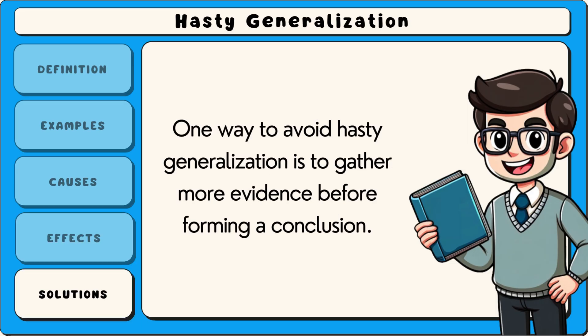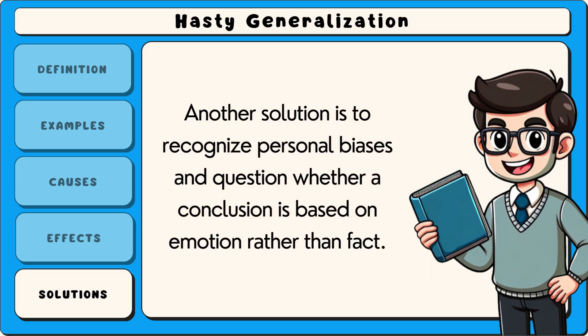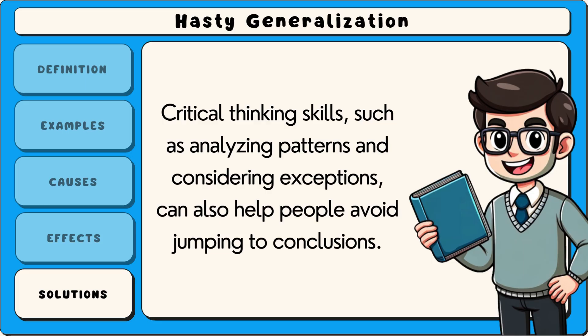One way to avoid hasty generalization is to gather more evidence before forming a conclusion. Taking the time to look at multiple sources or experiences can help create a more accurate picture. Another solution is to recognize personal biases and question whether a conclusion is based on emotion rather than fact. Critical thinking skills such as analyzing patterns and considering exceptions can also help people avoid jumping to conclusions.